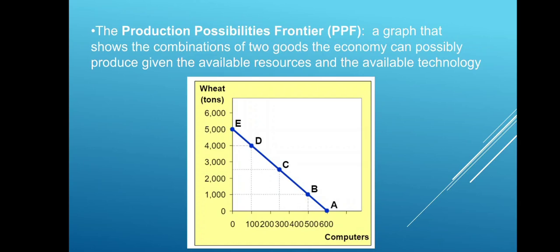So the opportunity cost of 600 computers is 5,000 tons of wheat. In a similar way, to obtain 5,000 tons of wheat you need to give up 600 computers.